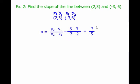Which gives me 6 minus 3 is 3, negative 3 minus 2 is negative 5. And that can't be simplified, so our slope is simply negative 3 fifths. So all we did is we used this formula right here, and we plug our numbers into it to get our slope.